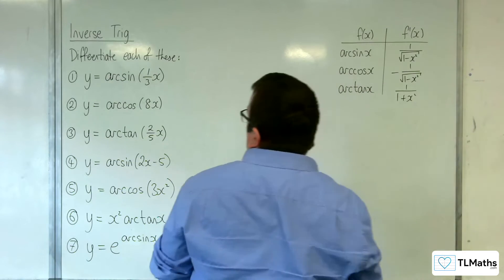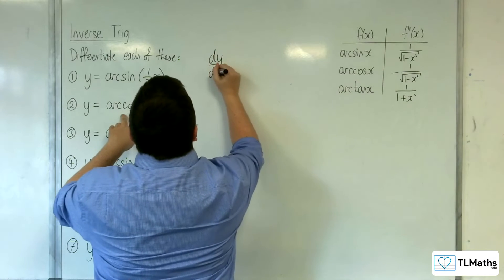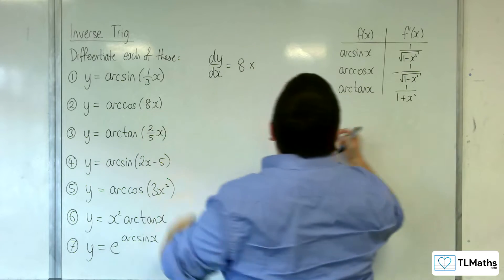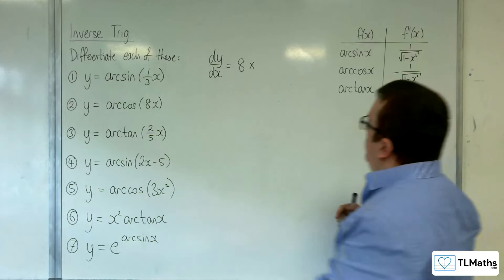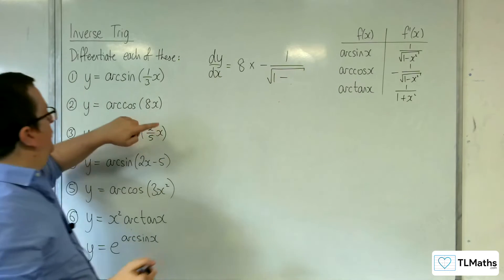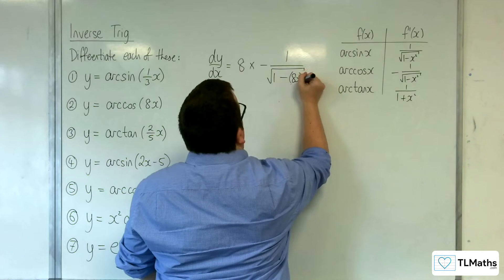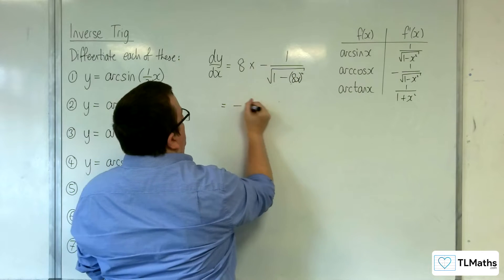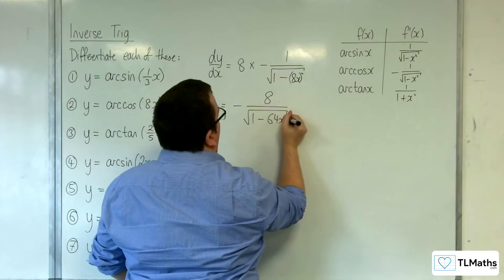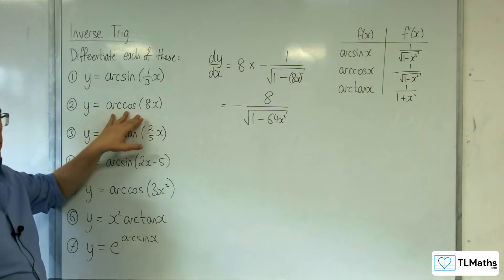Number two: y equals arc cosine of eight x. Using the chain rule, the derivative of the inside is eight, which comes out the front. Arc cosine differentiates to minus one over the square root of one minus x squared. So we get minus one over the square root of one minus (eight x) squared, giving us minus eight over the square root of one minus 64x squared. That's the derivative of arc cosine of eight x.